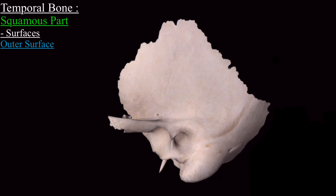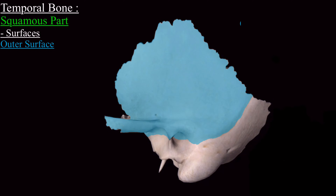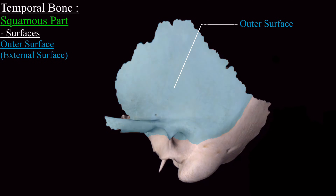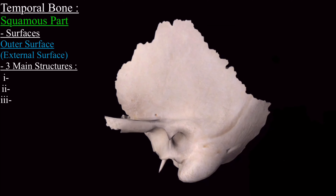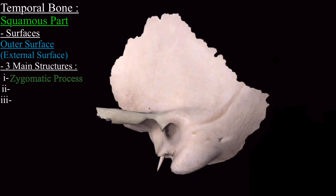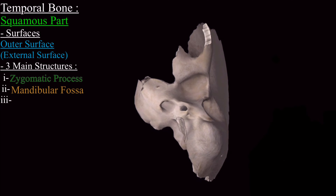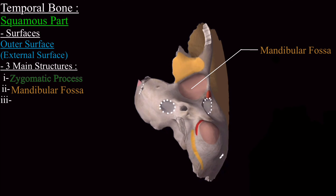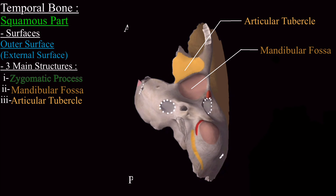First we will discuss the surfaces. The outer surface, also called the external surface, has three important landmarks: the zygomatic process, the mandibular fossa, and the articular tubercle — the articular tubercle is the highlighted yellow area present anterior to the mandibular fossa. On the external surface is also present a groove that lodges the middle temporal artery.